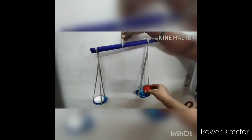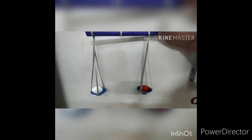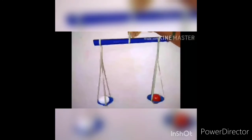The pans are neither going up nor down. So when the pans are balanced, the objects in the pans have equal weight.